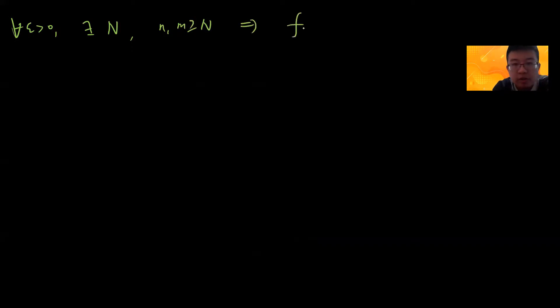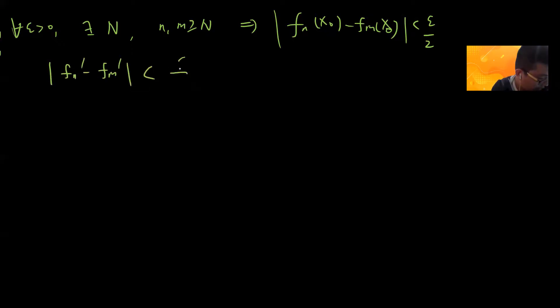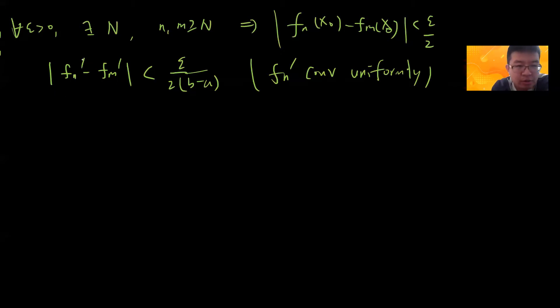Let's write down everything. For epsilon greater than zero, we can find N such that when n, m are greater or equal to N, we have |fn(x₀) − fm(x₀)| less than epsilon divided by 2. And we also have |fn prime(t) − fm prime(t)| less than epsilon over 2(b − a), for every t in [a, b], since fn prime converges uniformly. I choose my epsilon to be epsilon divided by 2(b − a).